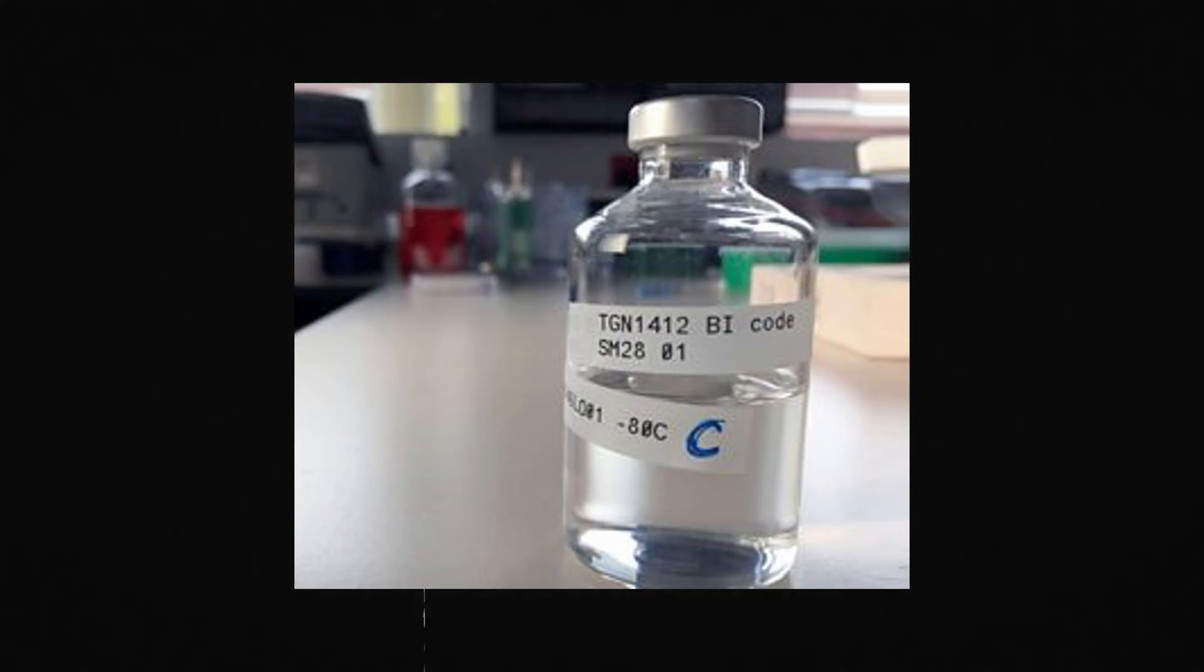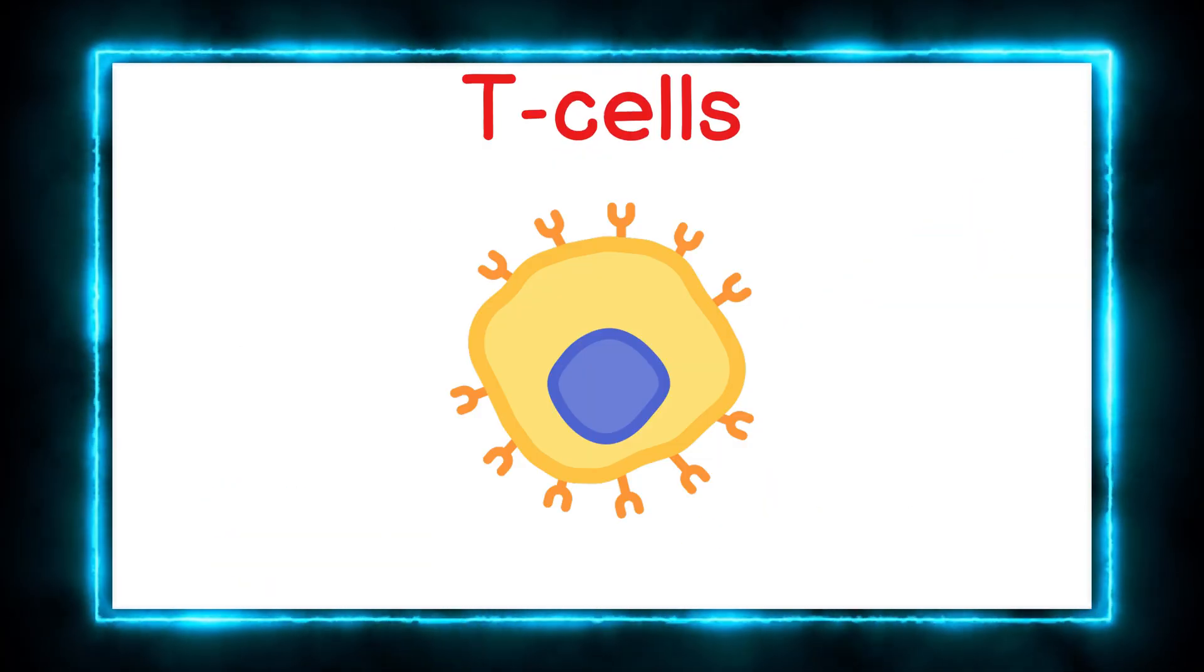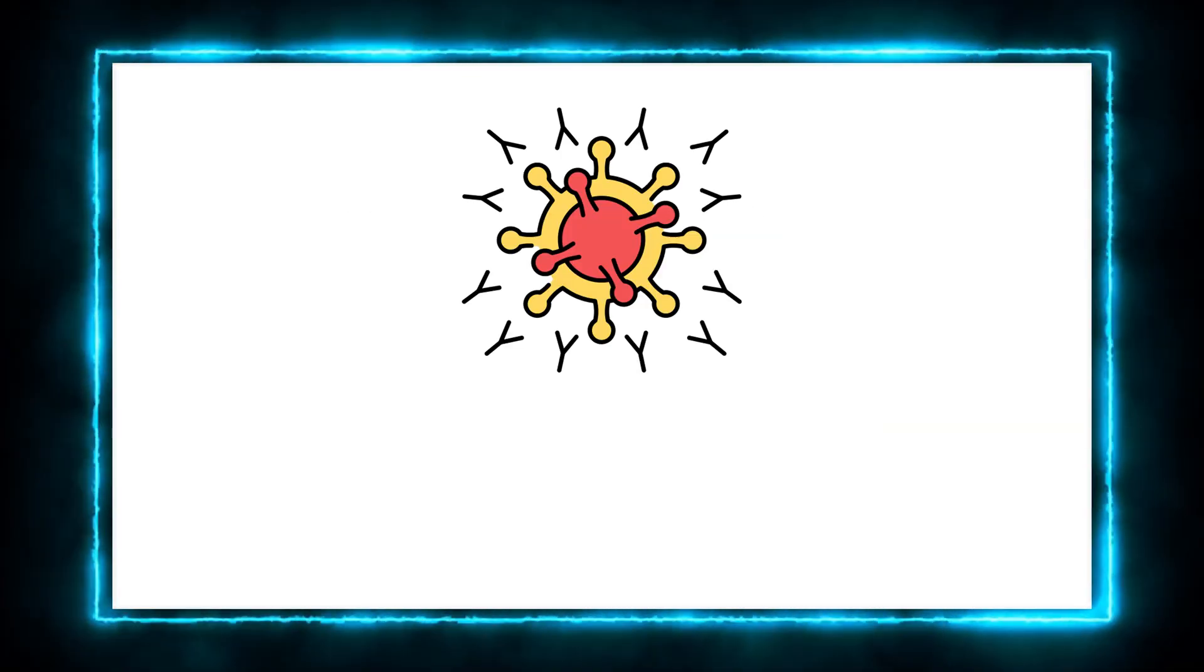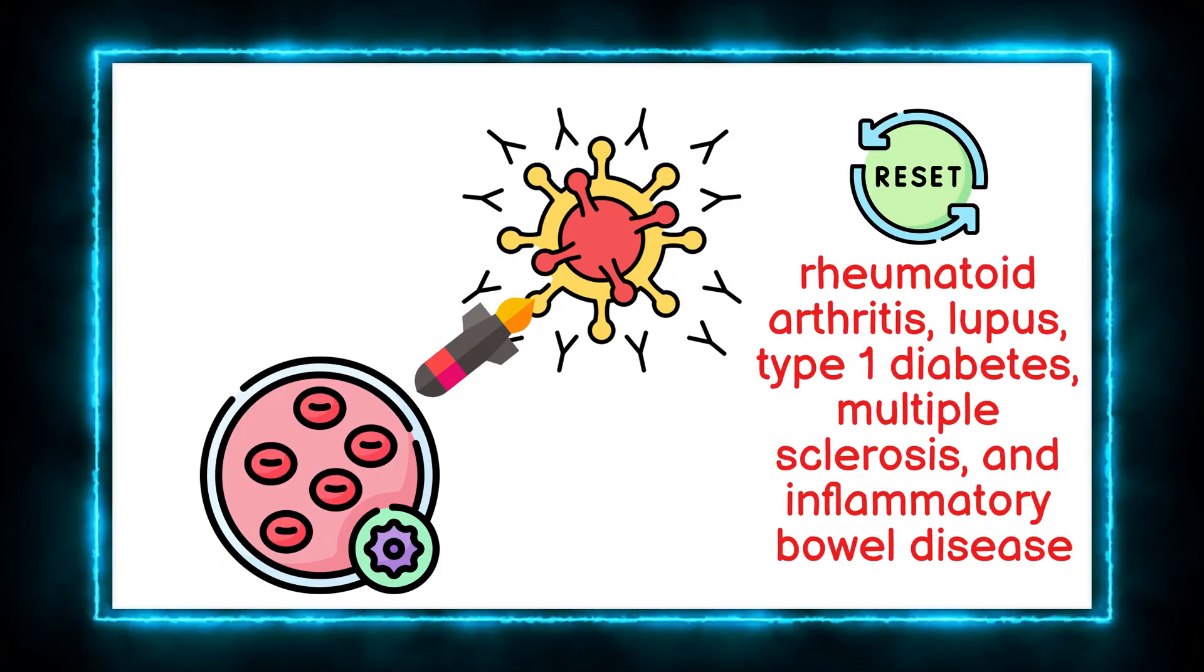But TGN-1412 was different. Its target was a protein called CD28, essentially an ignition key for T-cells, which control the immune system. The idea was bold. Quickly wake up the immune system to attack, for instance, leukemia cells, or reset it in autoimmune diseases.